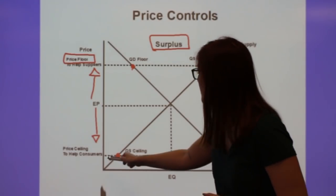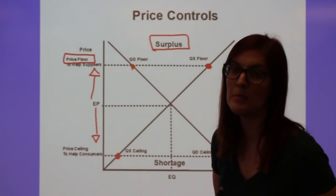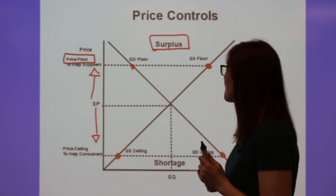So this price is set below equilibrium. So the ceiling is below. And that represents the max. They cannot go above this price. That's why it always is below equilibrium.